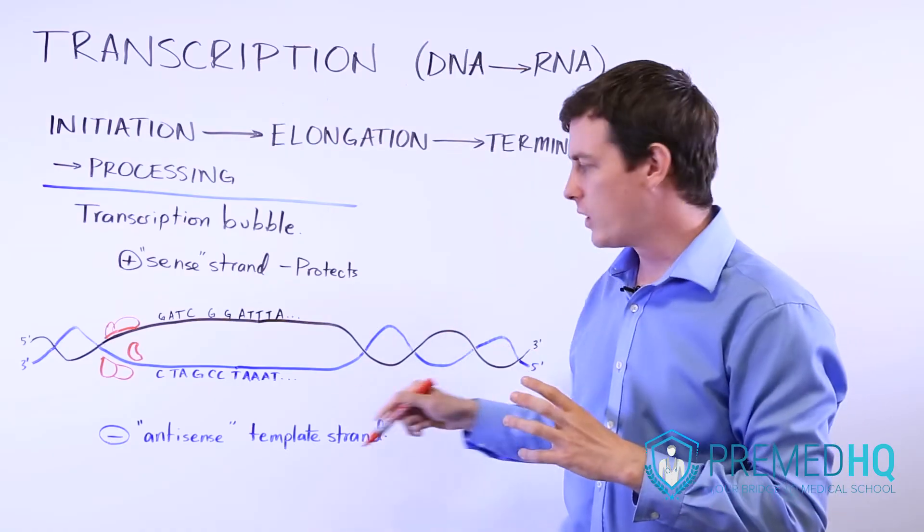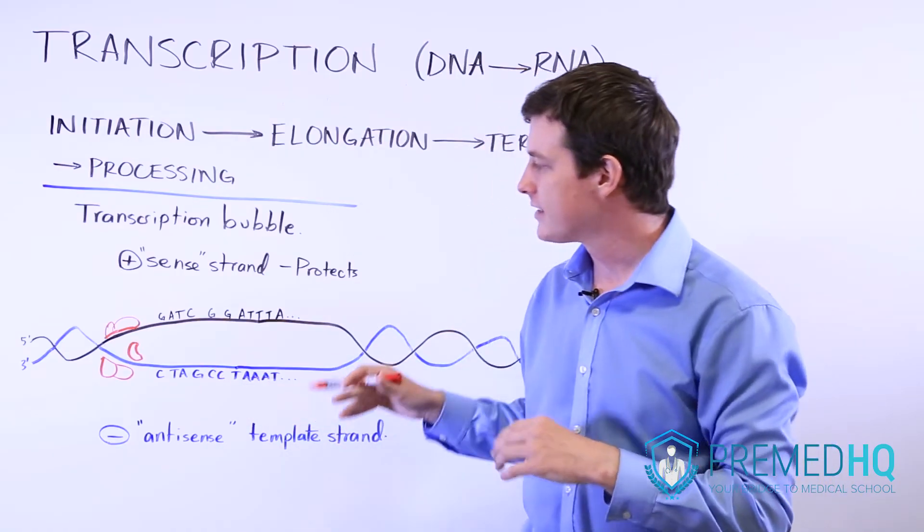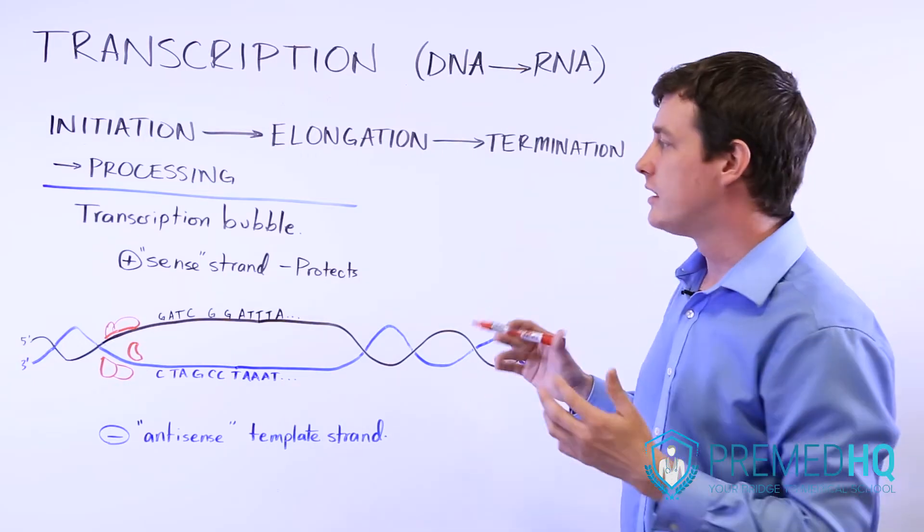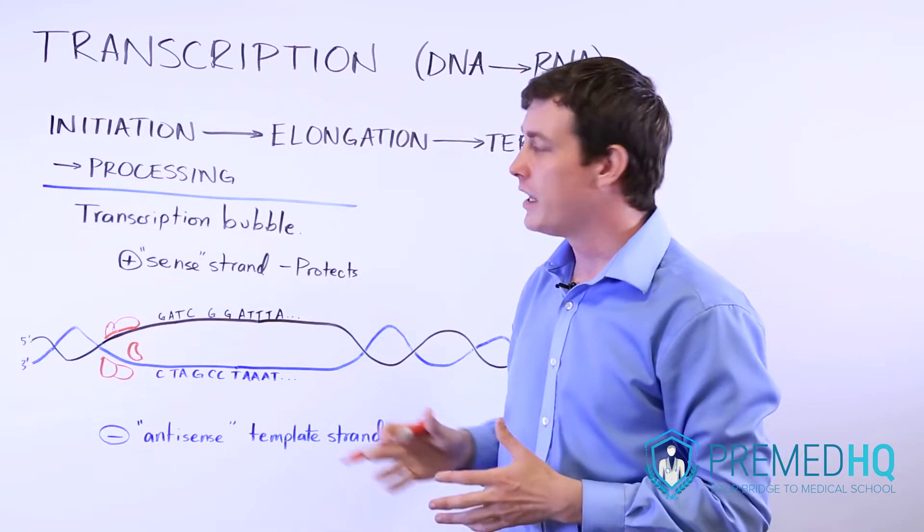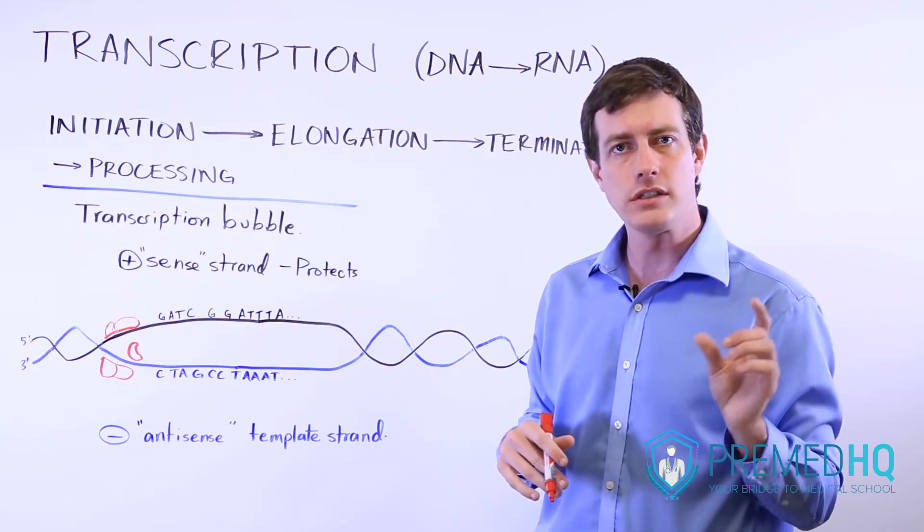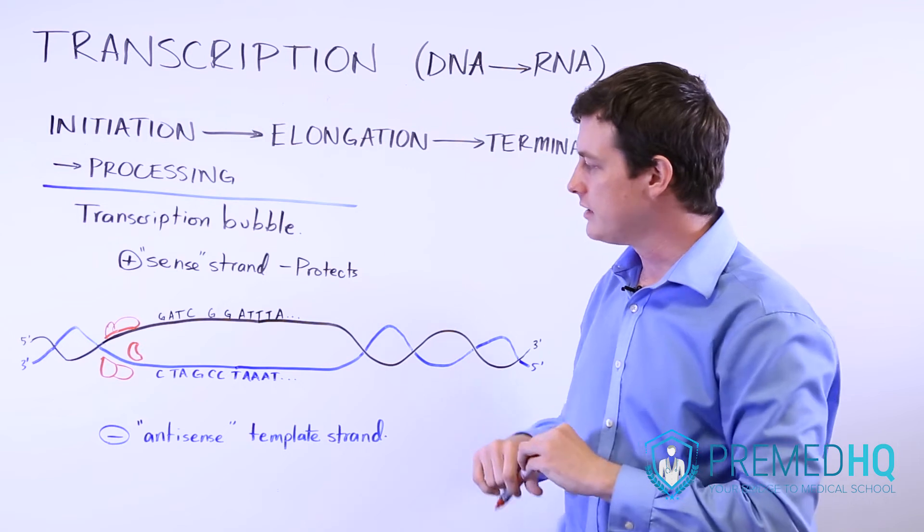And that's why they call it plus or sense, whereas this other one is antisense, it's the complementary strand. The only difference, of course, is that the new transcript that we're making is RNA, and so its bases will involve uracil U rather than thymine T.